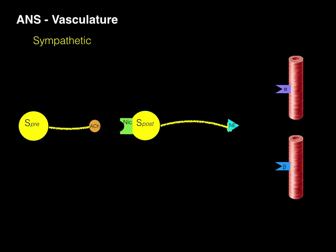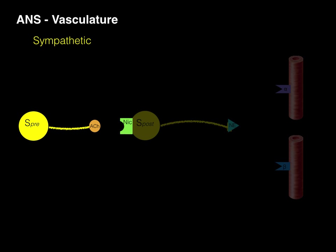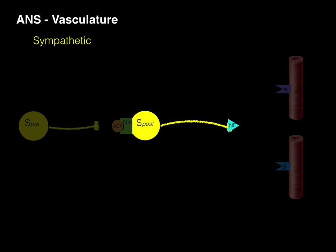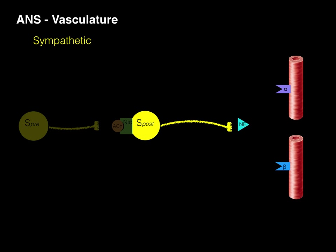Here we've got that schematic that shows pre- and post-ganglionic neurons going to vessels. There's our S-pre, which stands for sympathetic pre-ganglionic neuron, which conducts an impulse down to that terminal axon, which releases acetylcholine into synapse number one. This occurs at all sympathetic chain ganglia — cervical, thoracic, lumbar, sacral — and also at the pre-aortic ganglia for blood vessels of the gut tube. Acetylcholine then binds to a cholinergic receptor; in any autonomic ganglia it's a nicotinic receptor. This continues down the S-post, or sympathetic post-ganglionic neuron, where the impulse travels to the terminal axon, which releases norepinephrine into synapse number two.